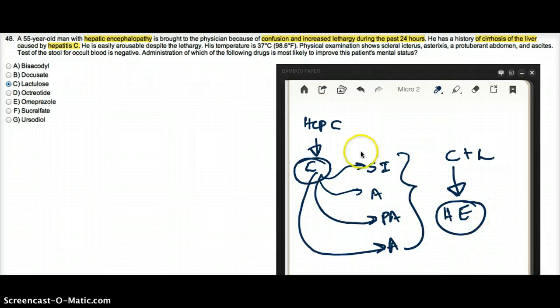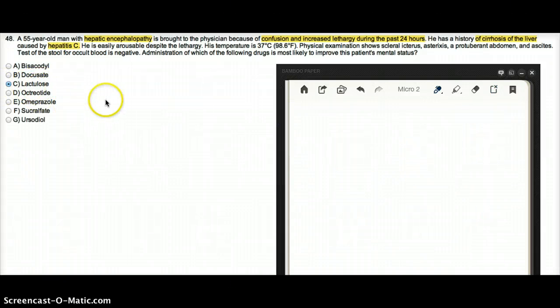So now they are asking administration of which of the following drugs is most likely to improve this patient's mental status. We would have to give a drug which is going to decrease this ammonia level in our body. So from the option choices lactulose is the only one which will decrease ammonia level in the body.